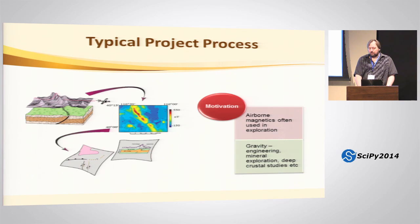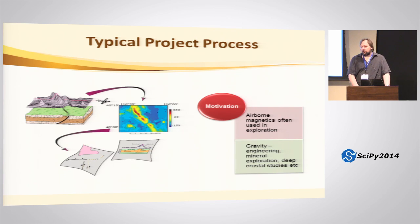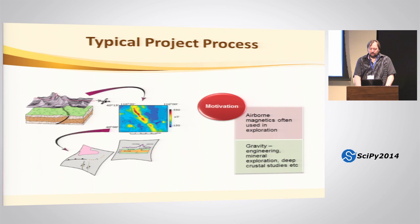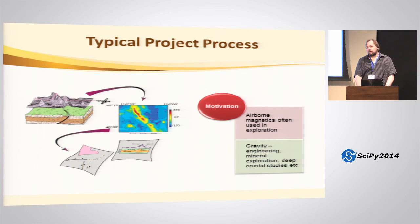Airborne magnetics and radiometrics are used a lot because they really are the cheapest data set. For exploration, you'd likely collect those before using other techniques. We also have a lot of gravity data, which we use largely for engineering studies — things like sinkholes. We do have some problems with that in certain places.